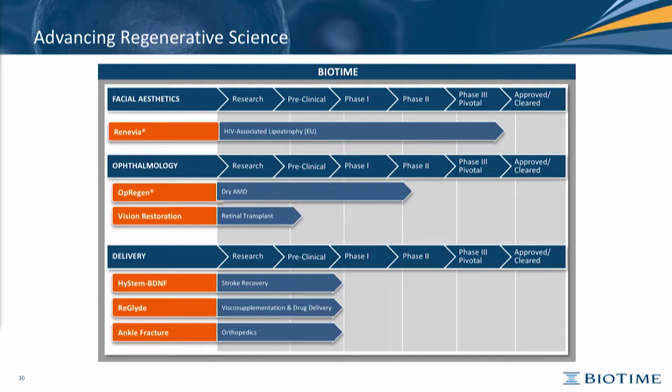We have a vision restoration program in which we are now testing 3D retina. This uses stem cells that produce a cap at about four to six week old human retinas in the embryo. We have inserted these in mice and have been able to produce networking of dendrites and synapses to the ganglion cells, and we have been able to record visual stimuli in the superior colliculus that were produced by human cells.